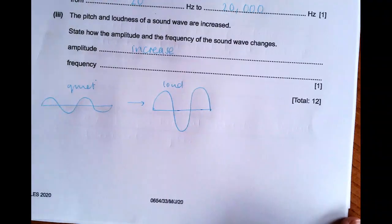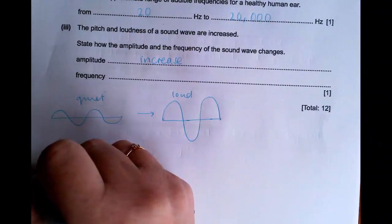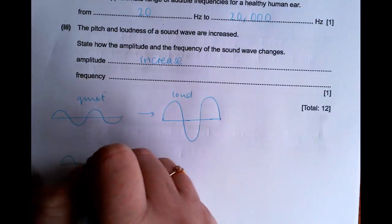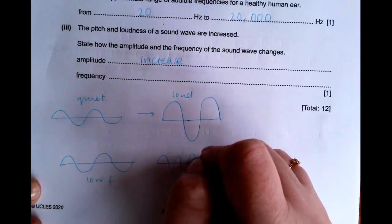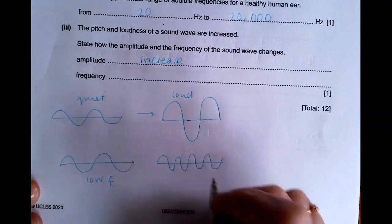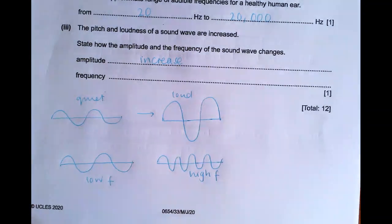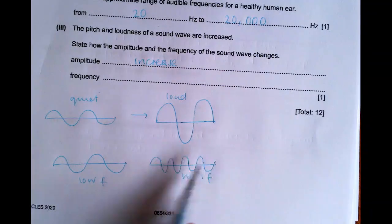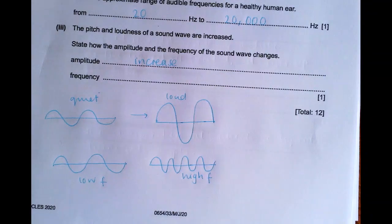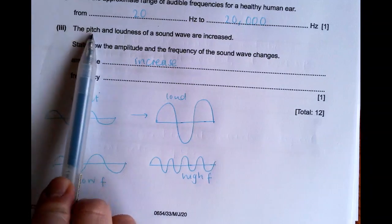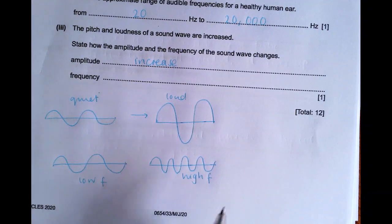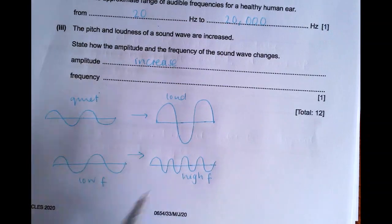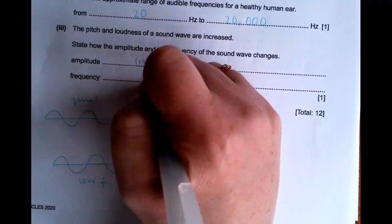Now frequency is to do with pitch. So if I draw a wave that looks like this and call that low frequency, and I draw another one that looks like this, that's high frequency. So I can see more waves in a space of time. The frequency has increased. Pitch is to do with frequency. High pitch is high frequency. Low pitch is low frequency. So we also have to increase our frequency to hear a higher pitch.